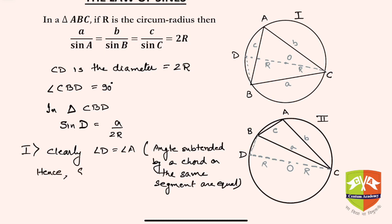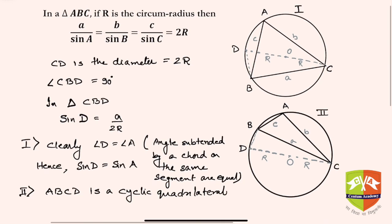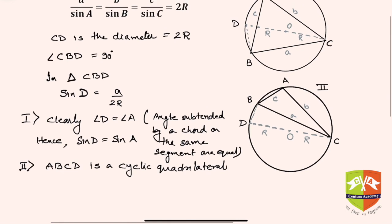In case two, if you see, ABCD is a cyclic quadrilateral. That means in a cyclic quadrilateral we know that opposite angles are supplementary, so angle A plus angle D is 180 degrees.